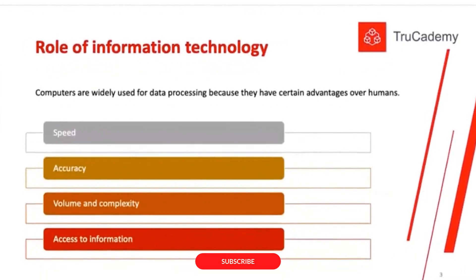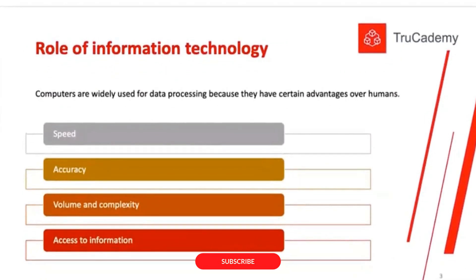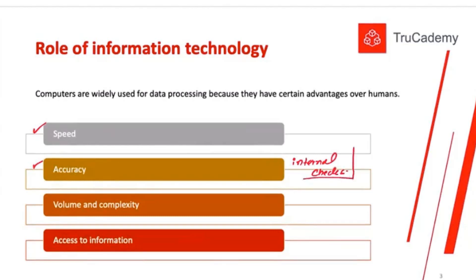Next: the role of information technology. Computers are widely used for data processing because they have certain advantages over humans. First, speed — computers process data very quickly compared to humans. Second, accuracy — in any computer system there will always be internal checks and internal controls, and the computer will always obey and follow these controls. So the accuracy of recording transactions will be much higher in a computer system compared to humans.